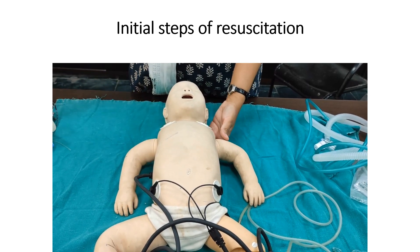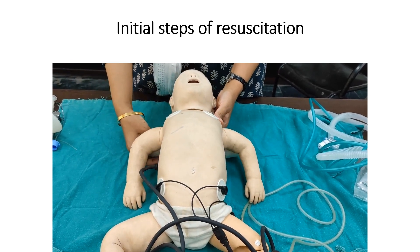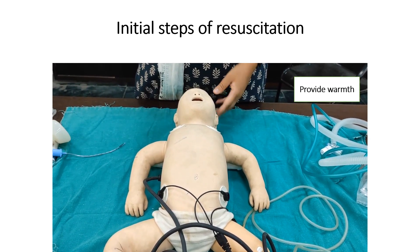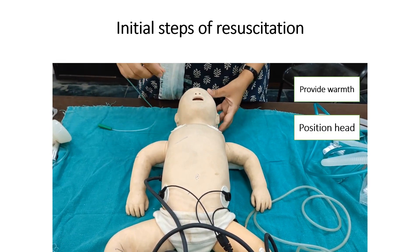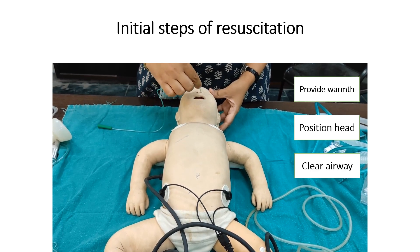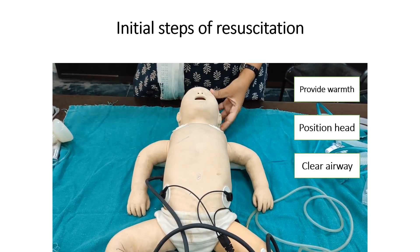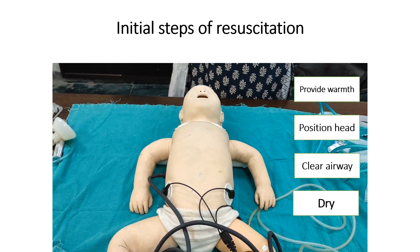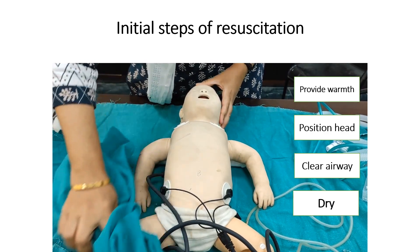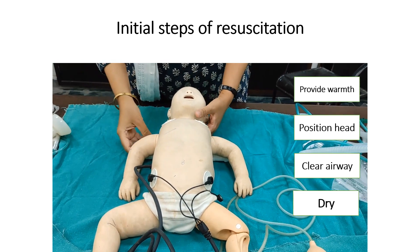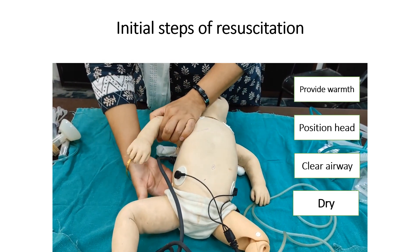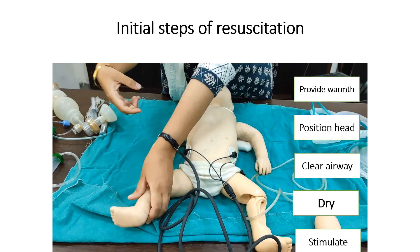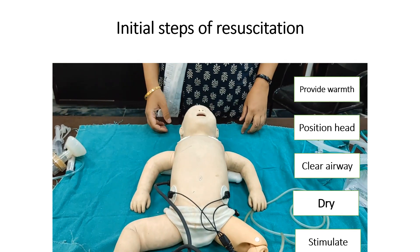To summarize all five steps: first keep under radiant warmer; then put shoulder roll for sniffing position; then suction oral cavity first to clear the airway, then nose, with suction pressure 80 to 100 mmHg; dry the baby after suctioning (drying before suctioning would cause aspiration of secretions); reposition; then stimulate by rubbing the back or flicking the sole.